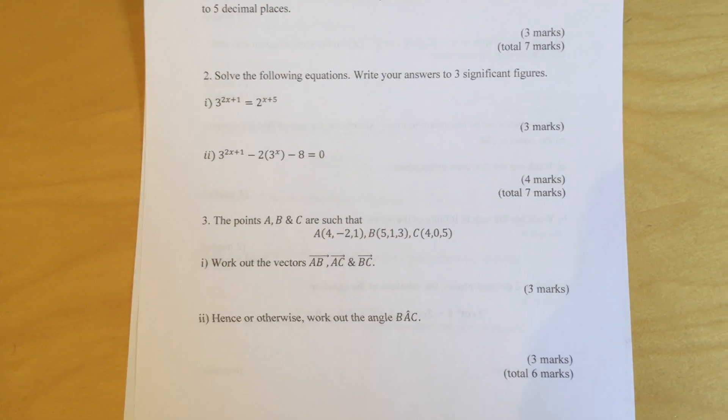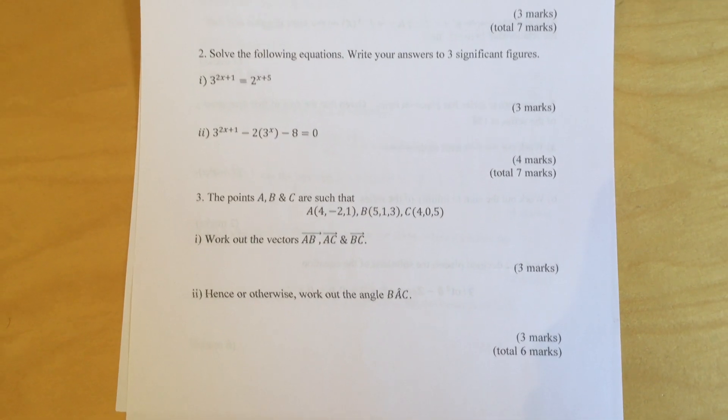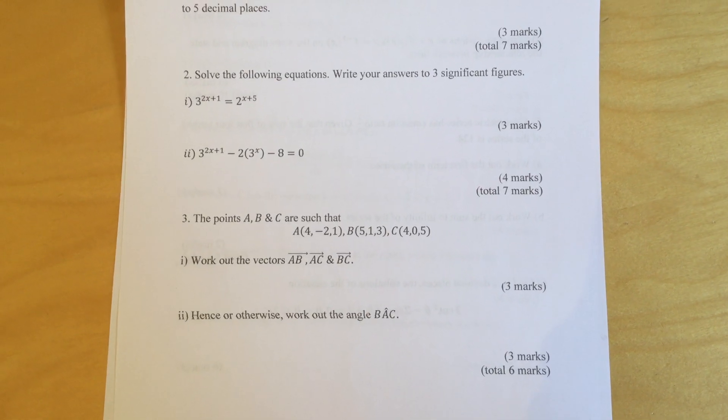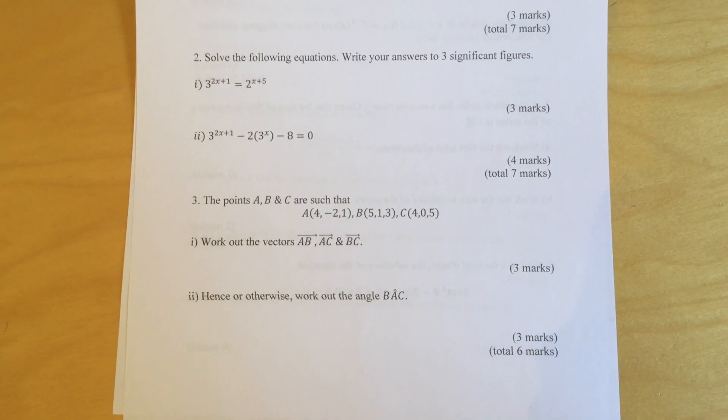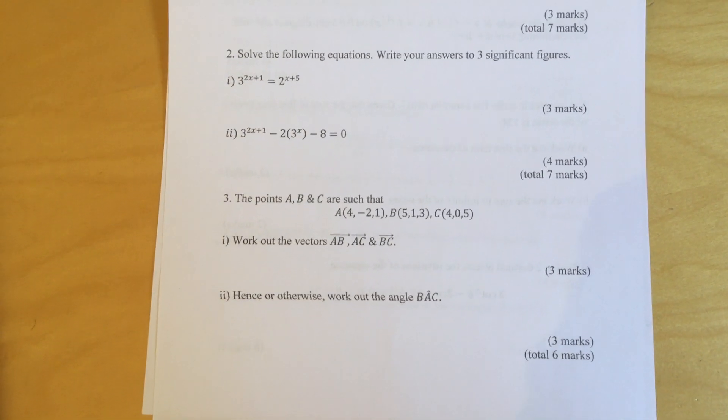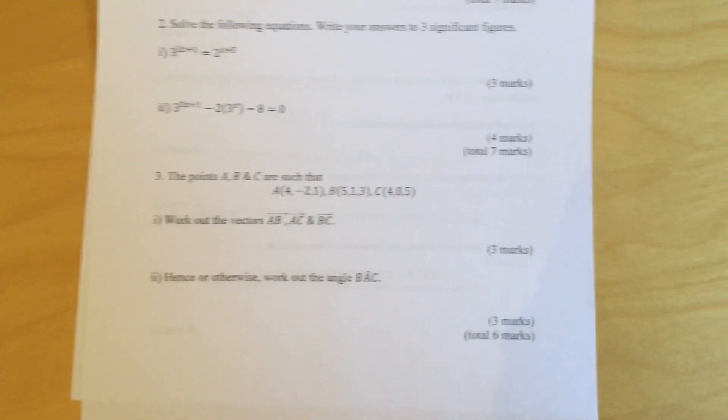Question 3: The points A, B, and C are such that A is (4, -2, 1), B is (5, 1, 3), and C is (4, 0, 5). Work out the vectors AB, AC, and BC. Hence, or otherwise, work out the angle BAC.